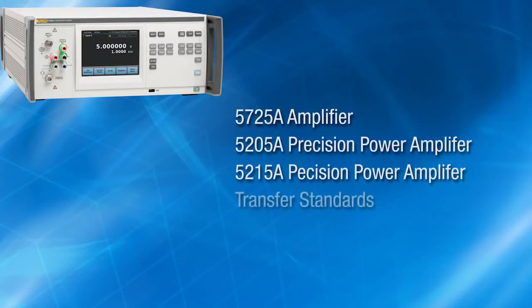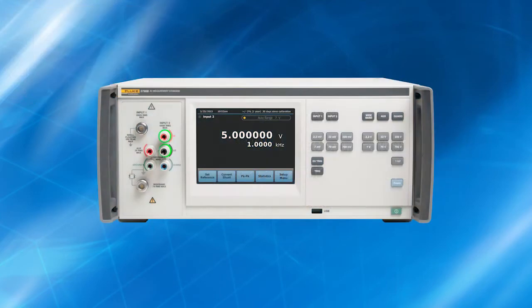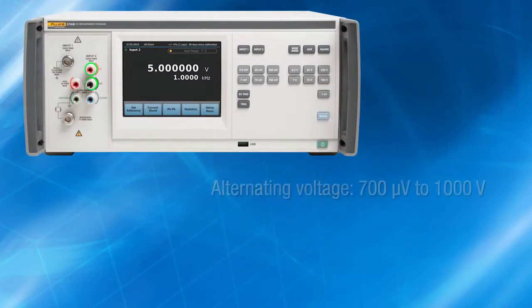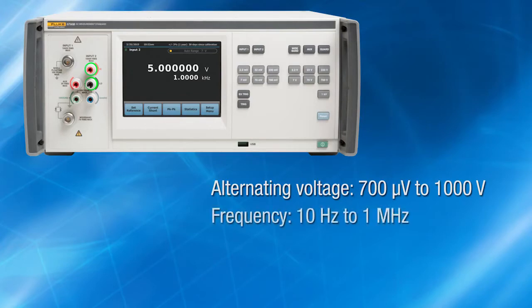The 5215A and transfer standards and AC voltmeters. The 5790B covers an alternating voltage range of 700 microvolts to 1000 volts and a frequency range of 10 hertz to 1 megahertz.